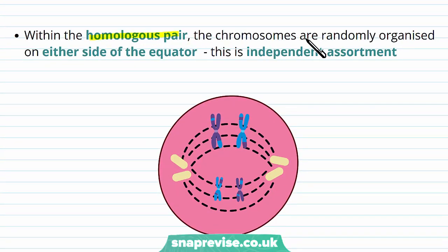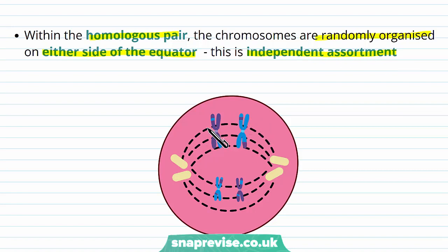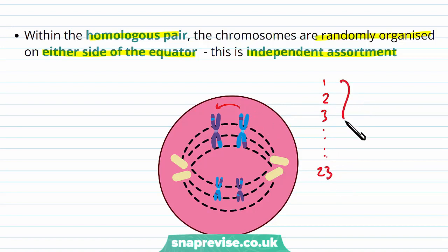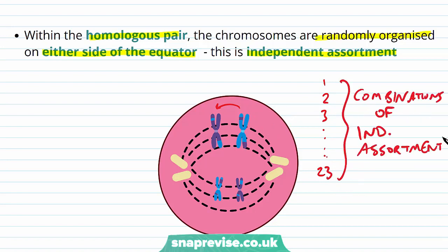Within the homologous pair, the chromosomes are randomly organised on either side of the equator — this is known as independent assortment. Independent assortment means that either chromosome of a pair could go on either side; the blue one might be on the left instead of the purple one. If you imagine this happening across all 23 pairs, there are huge combinations of arrangements, introducing even more genetic variation.